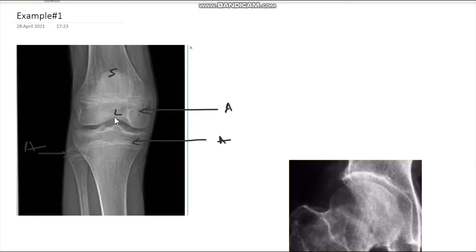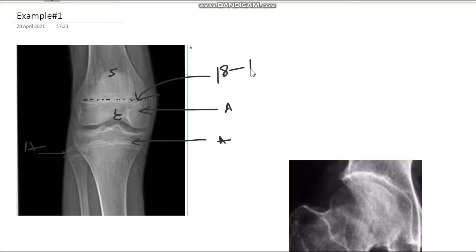Do you see any gap between the shaft and the epiphyses? There is some haziness, denoting that these bones are in the process of fusion — not completely fused, but not a clear gap either. When does the knee fuse? For the lower limb we start at the ankle at 16-17, go up to the hip at 17-18, and at the knee it is 18-19. So this X-ray is of a person who is 18 to 19 years of age.